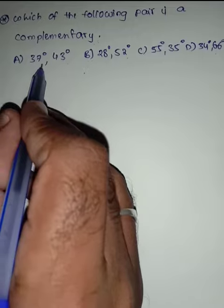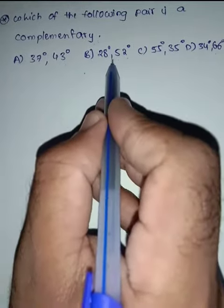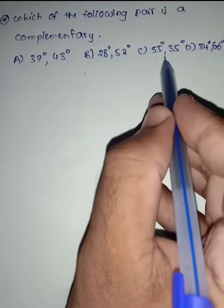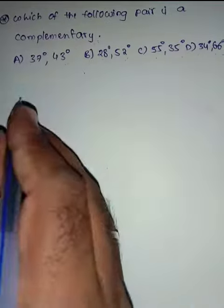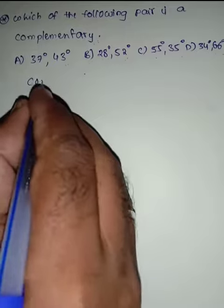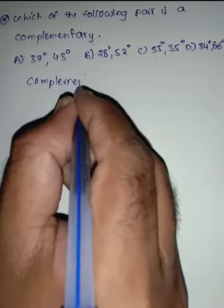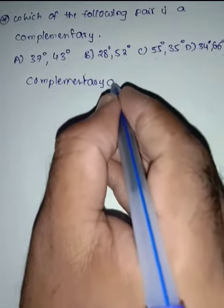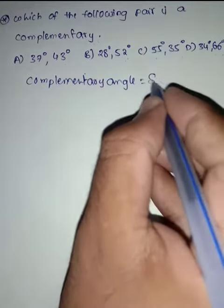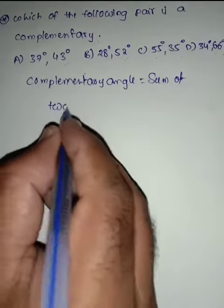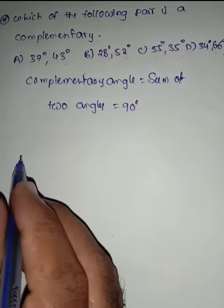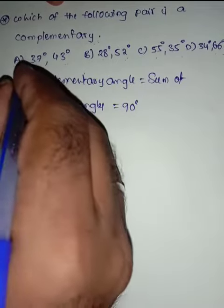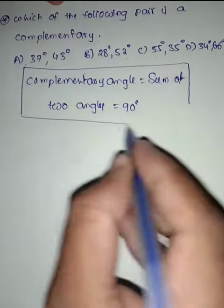Which of the following pair is a complementary angle? Option A: 37 and 43 degrees. Option B: 28 and 52 degrees. Option C: 55 and 35 degrees. Option D: 34 and 66 degrees. Complementary angles means the sum of two angles equals 90 degrees.